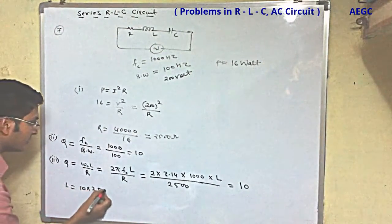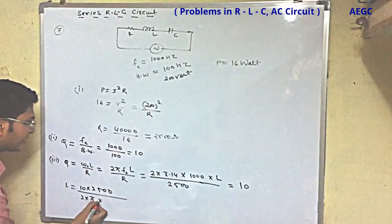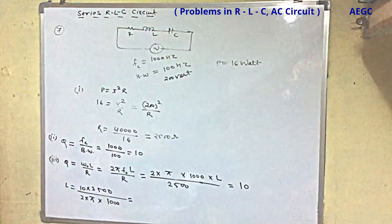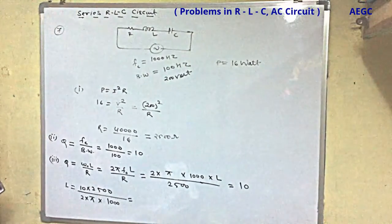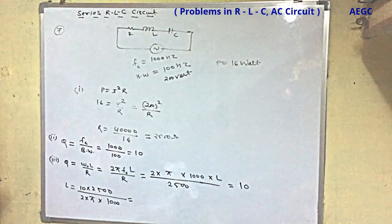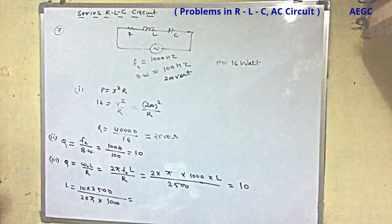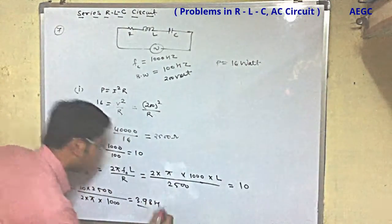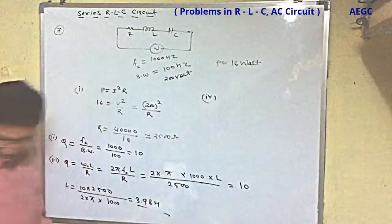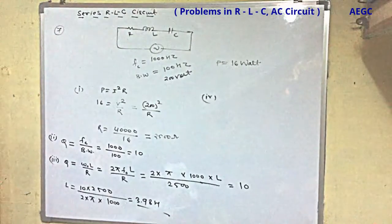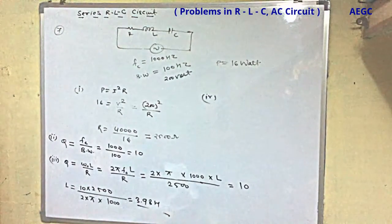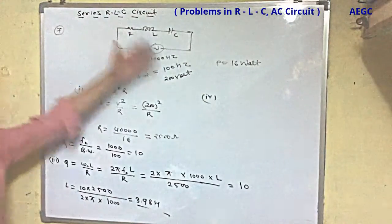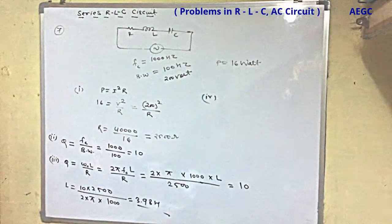To find the value of L, we rearrange: L = QR/(2π f naught). Substituting the values: L = 10 × 2500/(2π × 1000) = 25000/(6283.18) = 3.9789 Henry.